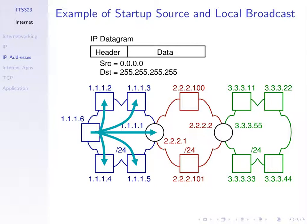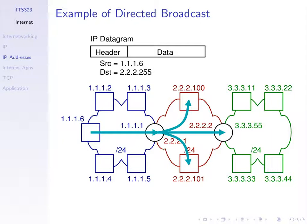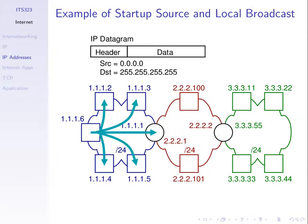That datagram is sent to everyone on your network. A special server may reply with a response: here is an IP address — 1.1.1.6, use that. This is used when we don't yet have an IP address but need to automatically discover one. Note: directed broadcast is sent to everyone on a particular subnet (directed to a subnet, possibly someone else's), while local broadcast goes to everyone on your current subnet even if you don't know the network address.